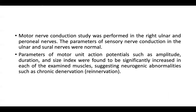Motor nerve conduction study was performed in the right ulnar and peroneal nerves. The parameters of sensory nerve conduction in the ulnar and sural nerves were normal. Parameters of motor unit action potentials such as amplitude, duration, and size index were found to be significantly increased in each of the examined muscles, suggesting neurogenic abnormalities such as chronic denervation.